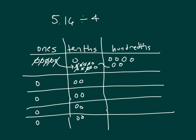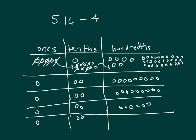Distribute them. There's 36 divided by 4, which is 9. So then it's 1.29 as our answer.